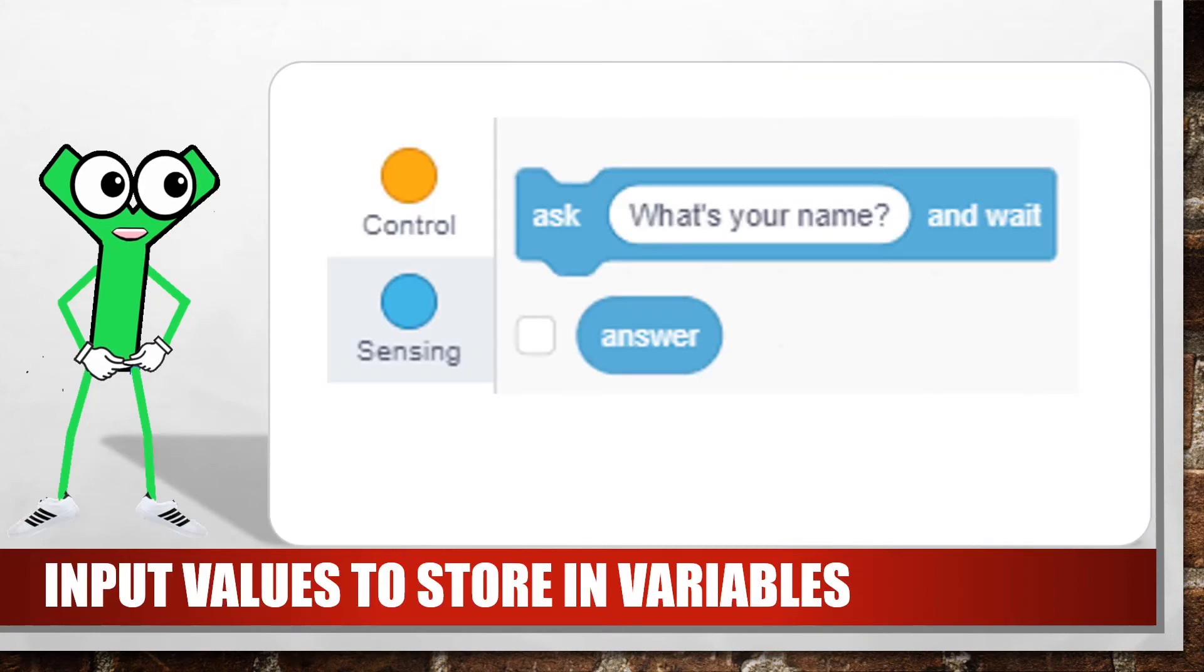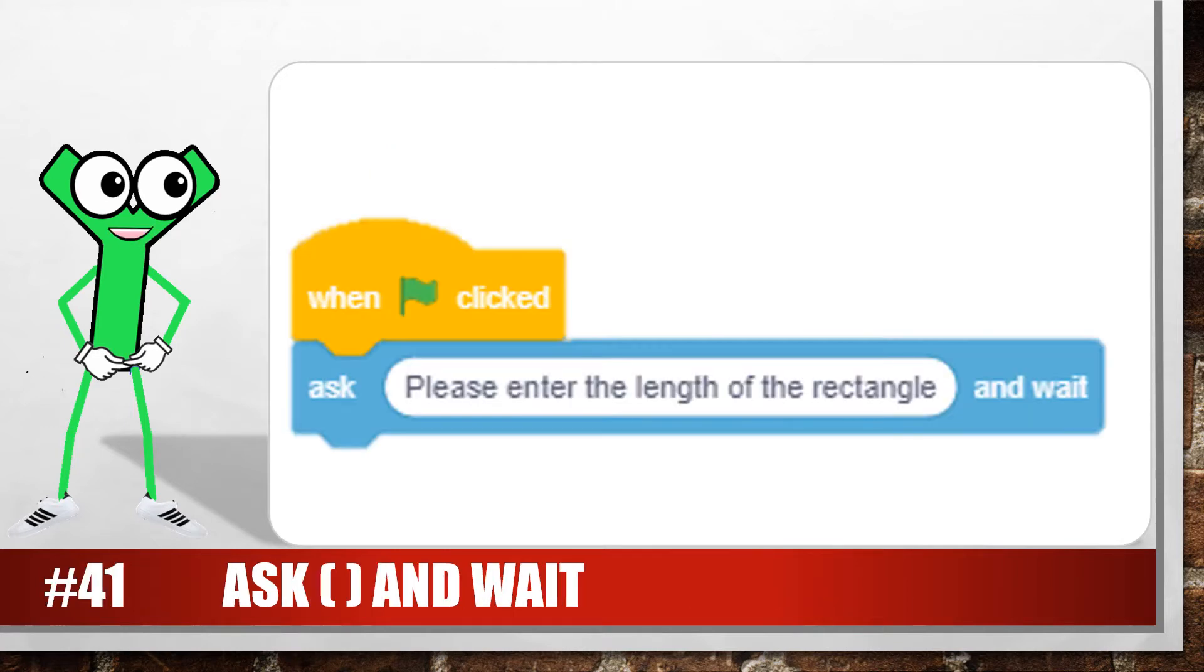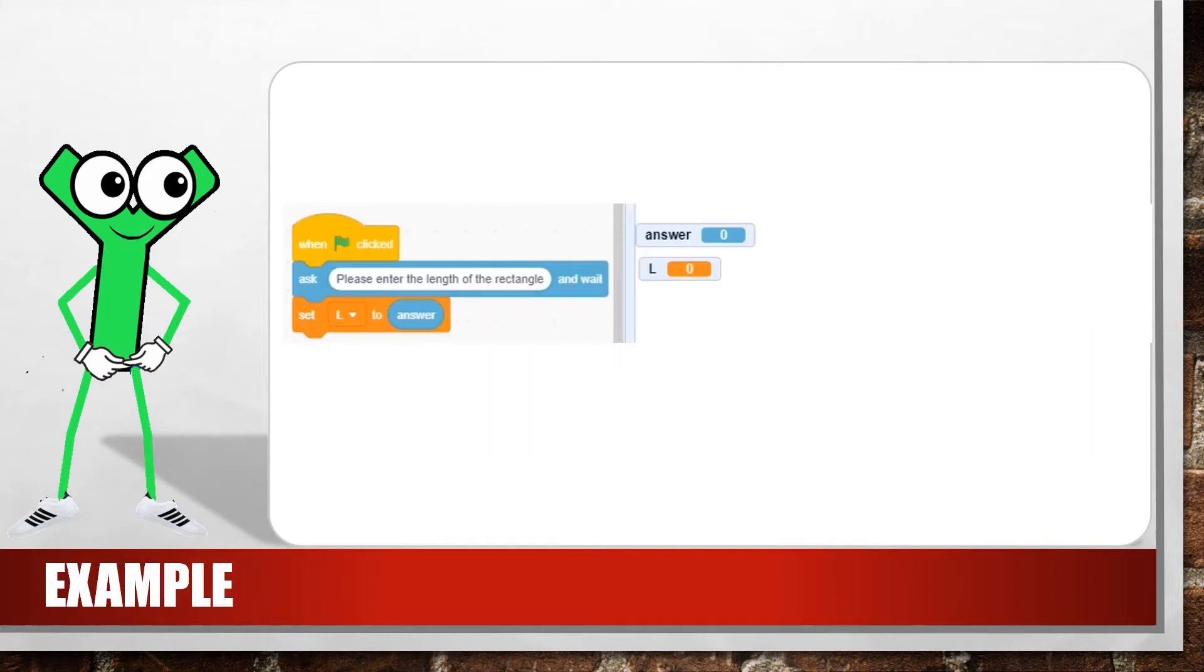Many computer programs require you to input values to allocate to variables. For example, if the program needs to calculate the area of a rectangle, you may need to input the length and the breadth of the rectangle. We will use the ask and answer blocks in the sensing group to do this. This light blue block will display a window at the bottom of the scratch stage to type input values. Like this.